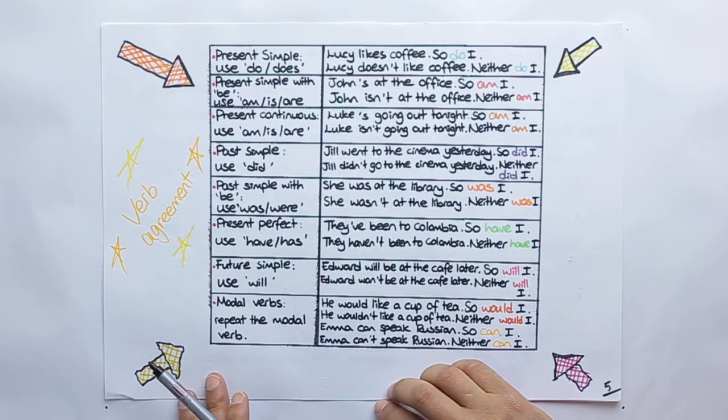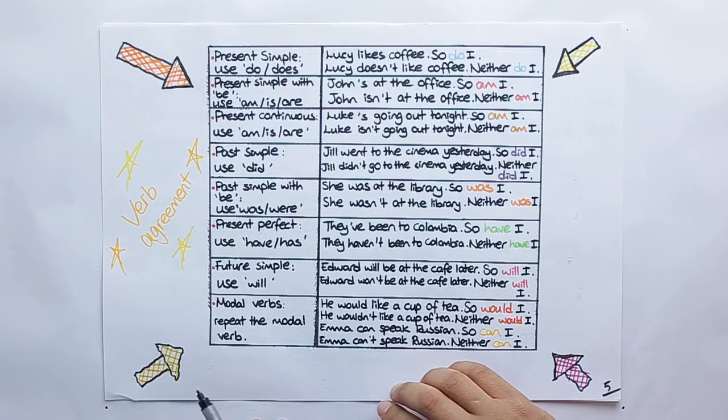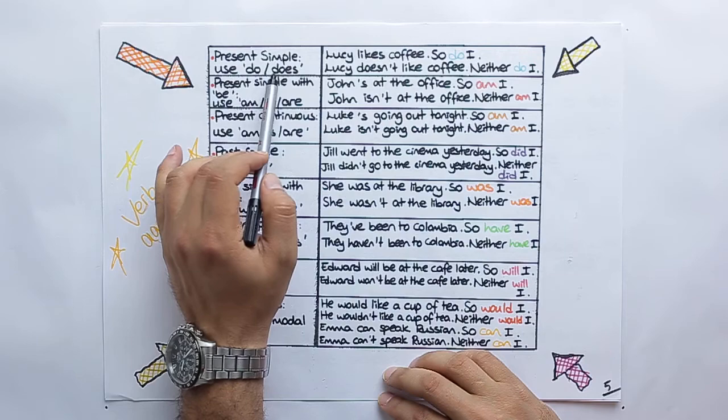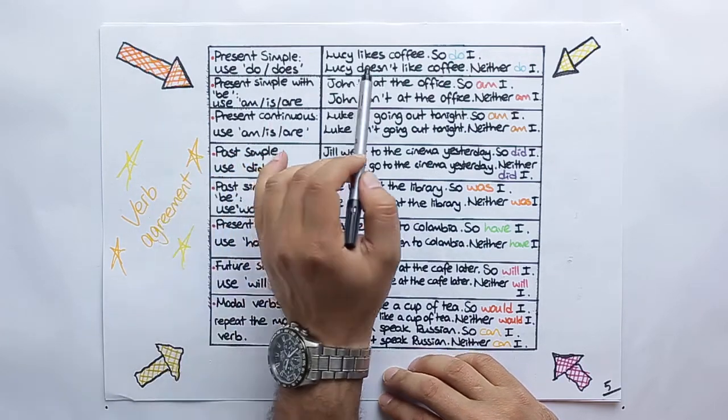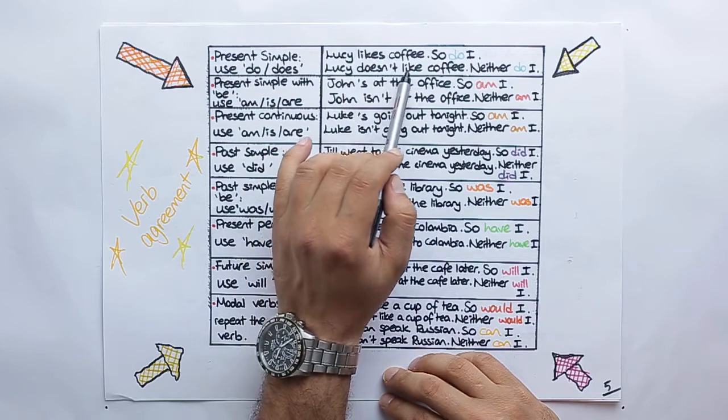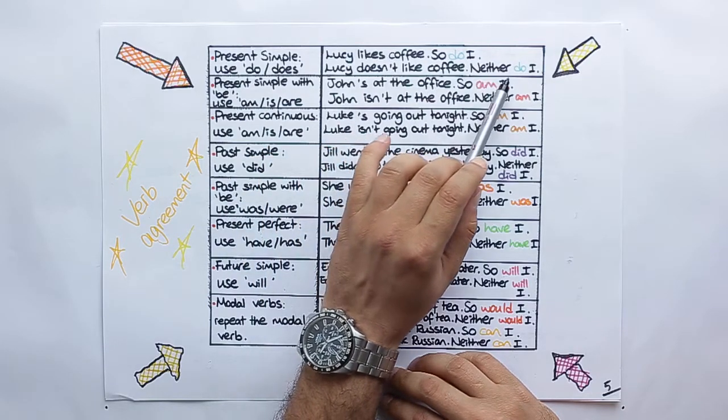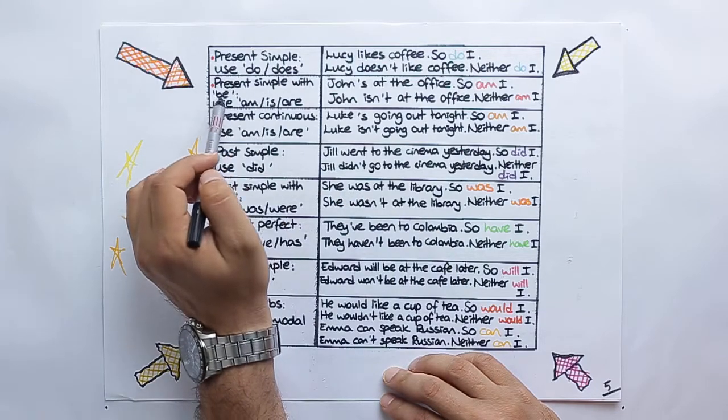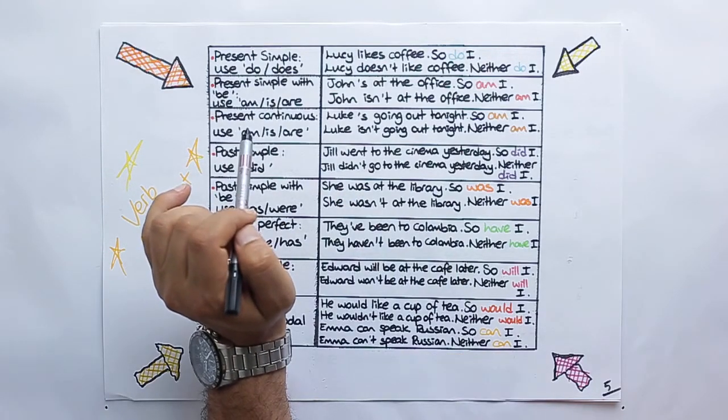Now, here, verb agreement. We are going to study all these ones. Present simple uses do or does. Lucy likes coffee, so do I. Lucy doesn't like coffee, neither do I. This is the present simple form. Present simple with be. Yes. Let's see this one.